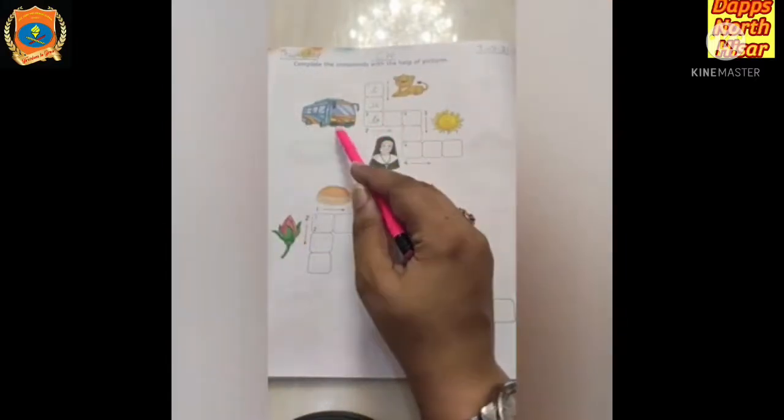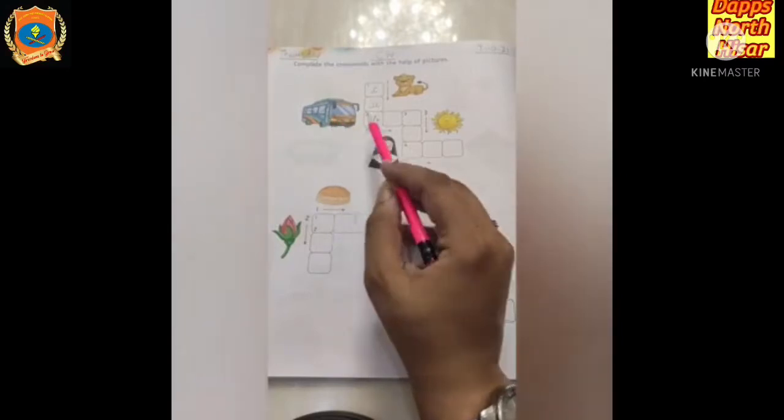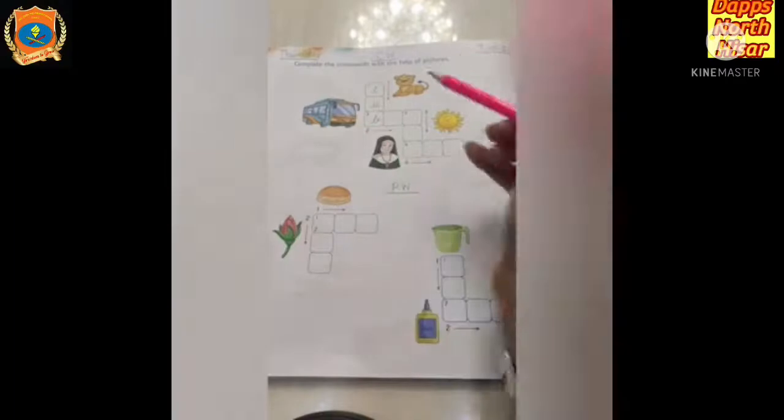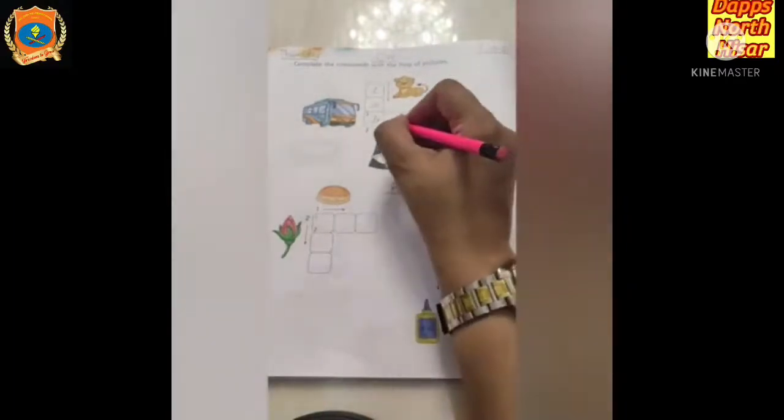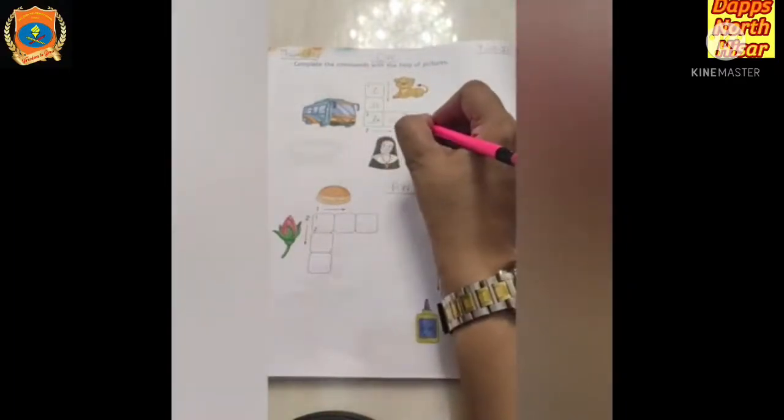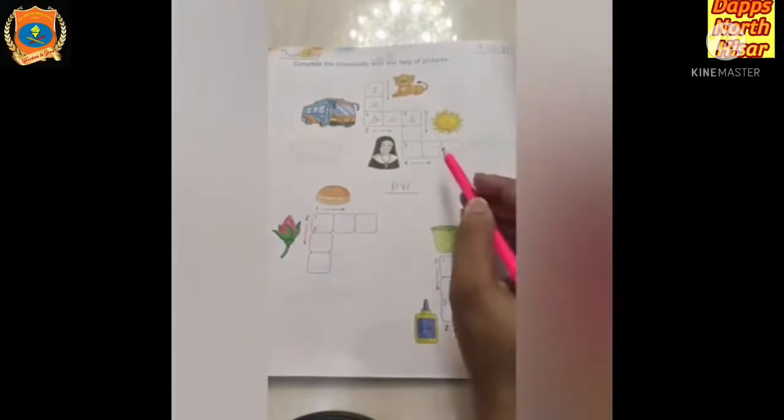Now the next picture is this is a bus. Second picture ka arrow side words hai, so we will write like this, b, u, s, bus, right?